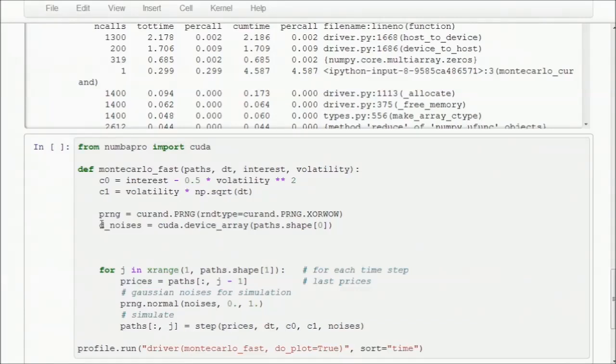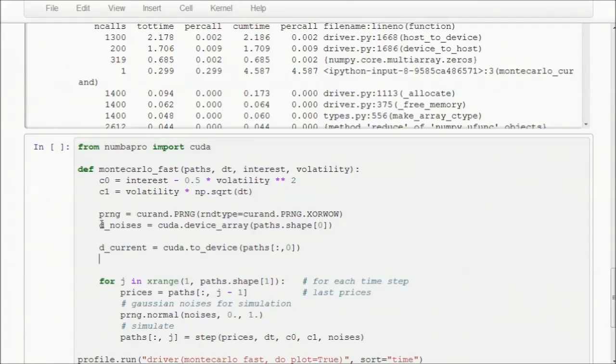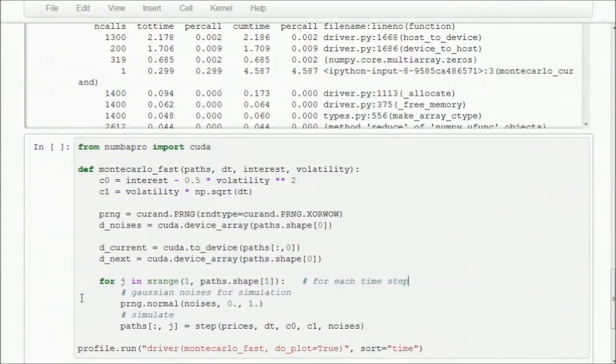For the current set of prices, we want to copy over our initial values, and we do that with the CUDA to device API call. And for the next set of generated prices, we just need to allocate an empty array like we did with noises. Inside of our for loop, we no longer need to slice out the current set of prices, so remove that line. For our random noise generation, we simply change the array to our GPU allocated array, so from noises to d underscore noises.